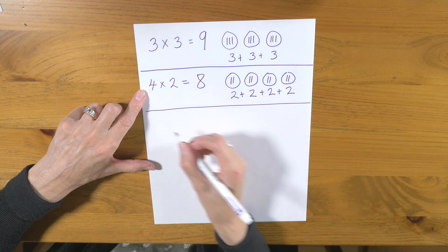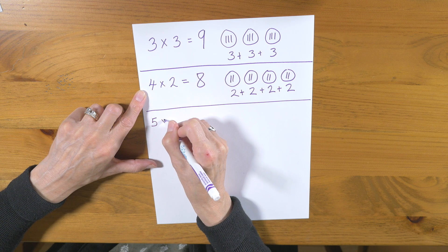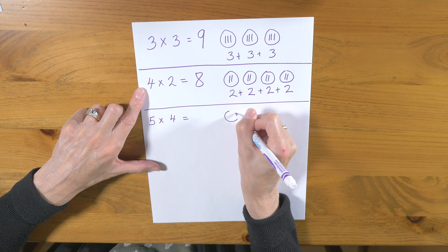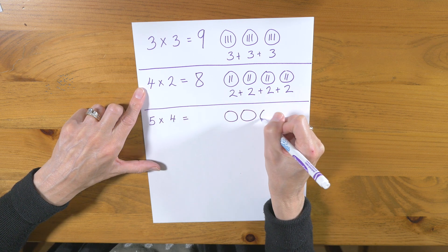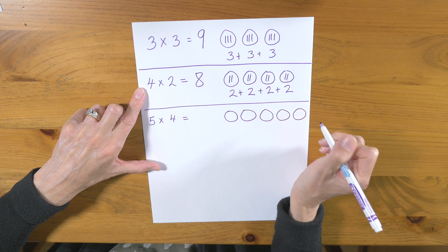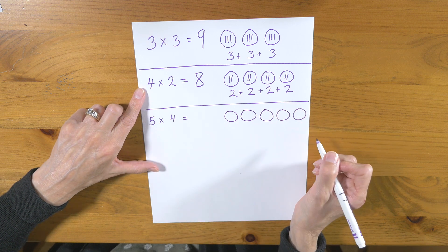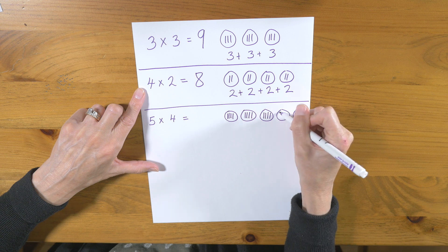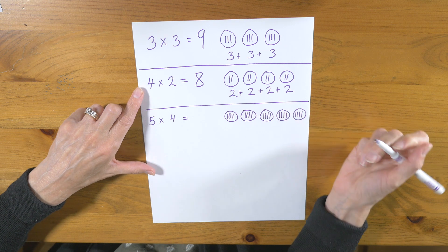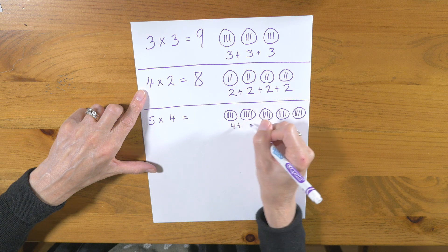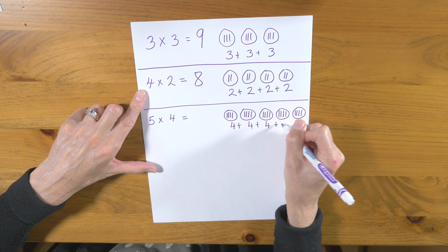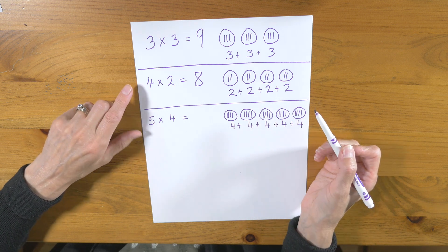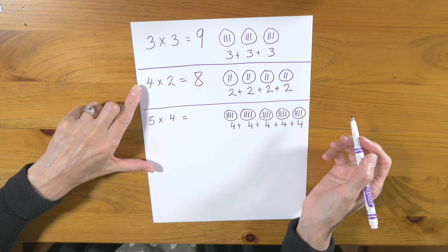Let's do another one. Let's do 5 times 4. So let's do 5 groups and we're going to put 4 in each group. And now we have to add that up: 4 plus 4 plus 4 plus 4 plus 4. Now if you need to count on your ruler or a hundreds chart to add that up, that's perfectly okay.